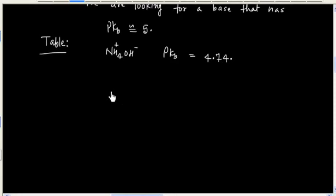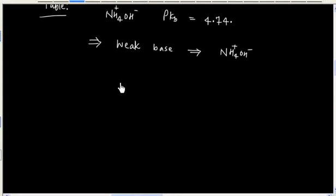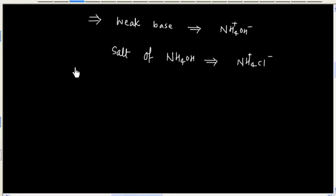So we have identified the weak base. So for this buffer we will use ammonium hydroxide, and other component will be salt of ammonium hydroxide, let us say NH4Cl, ammonium chloride. So we have two components: ammonium hydroxide and ammonium chloride.